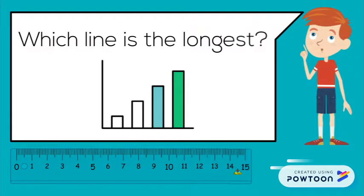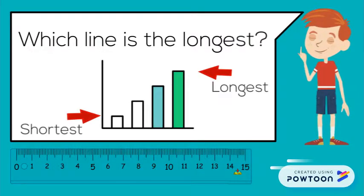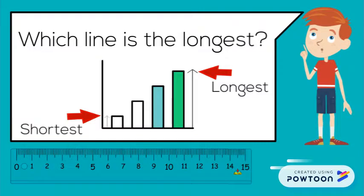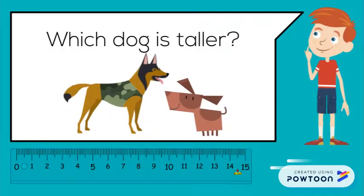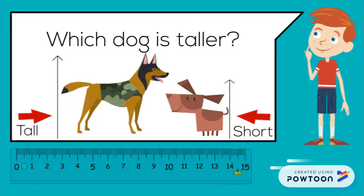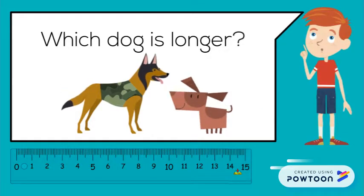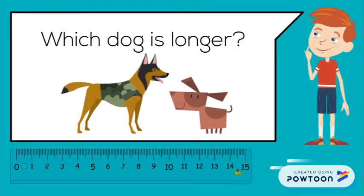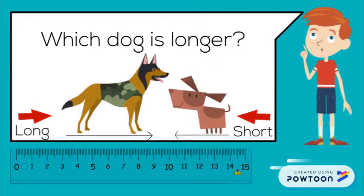Which line is the longest? The line on the right is the longest. Which dog is taller? The dog on the left is taller. Which dog is longer? The dog on the left is longer.